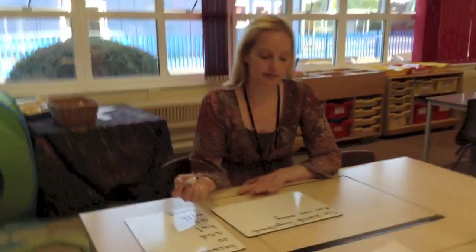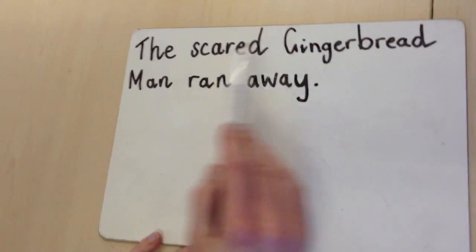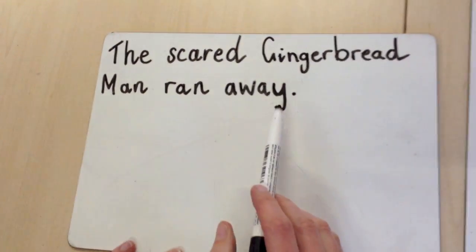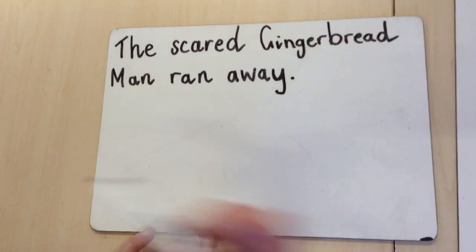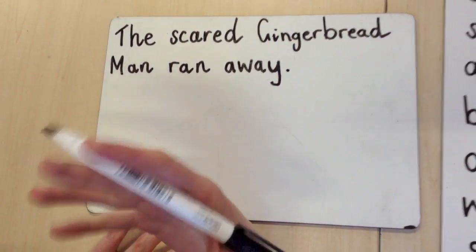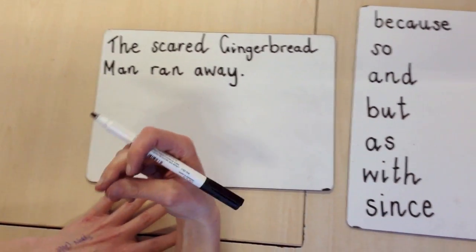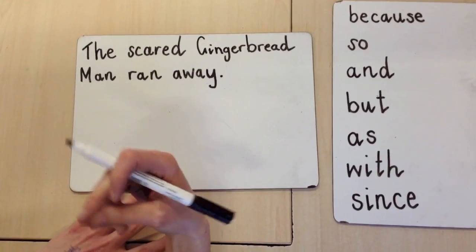Let me show you how to add more information into each sentence by using a connective. We take a simple sentence such as, the scared gingerbread man ran away. And I would ask the children, why? Why did he run away? And let's try and use the word because.